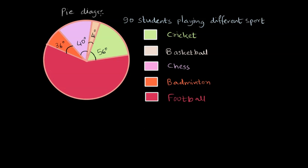We want to find out how many students play each sport from the pie chart. There are different sectors — each sport corresponds to one sector, coded in colors. For example, green refers to cricket and it subtends 56 degrees of central angle, and chess has a purple color and subtends 40 degrees of central angle. Using this pie chart, how can we find out how many students play a specific sport?